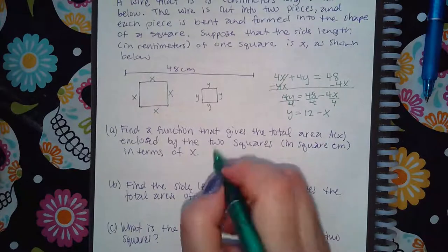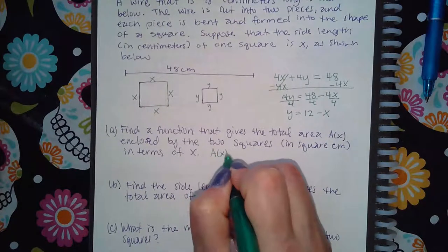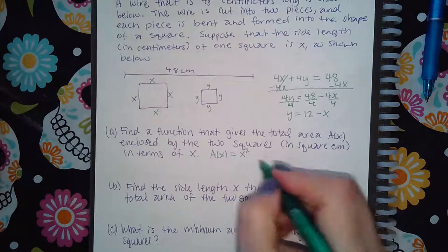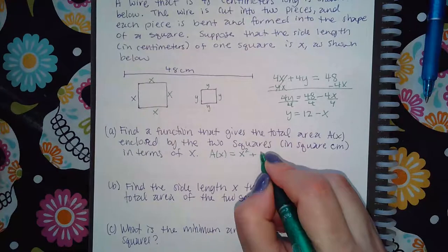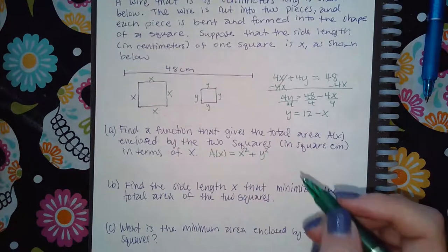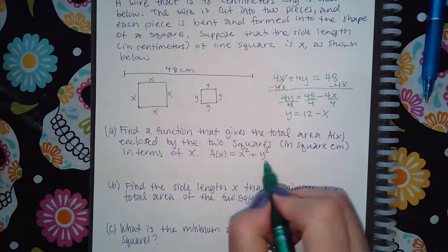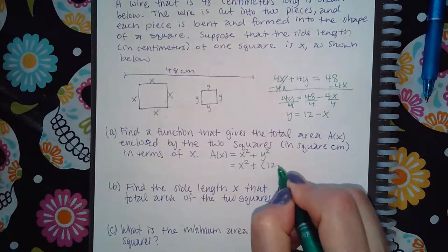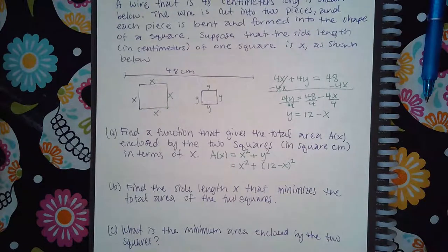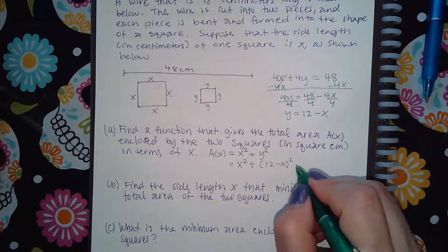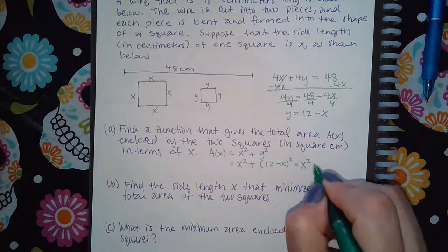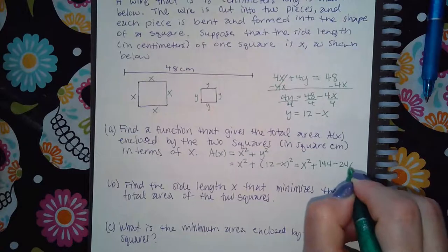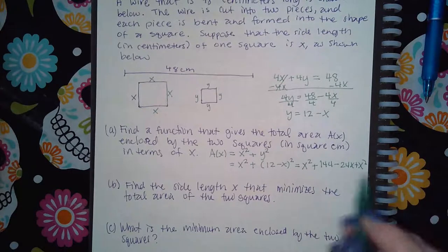Total area is x² (area of first square) plus y² (area of second square). Substituting y = 12 − x: A(x) = x² + (12 − x)². Expanding (12 − x)² by FOILing gives 144 − 24x + x².